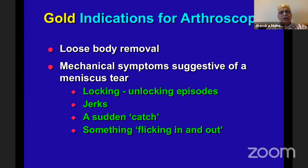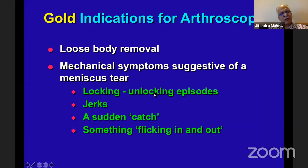Gold indications: for example, a loose body — the patient can point to it, you can see it on X-ray, that's a juicy indication. Just go in, remove the loose body, and the job is done. Then, mechanical symptoms suggestive of meniscus tear — not pain, but mechanical symptoms like locking. If confirmed on MRI, that's a good case because at least the locking will disappear. Similarly, jerks due to unstable meniscus correlated with MRI findings are good mechanical symptoms to relieve by arthroscopy.